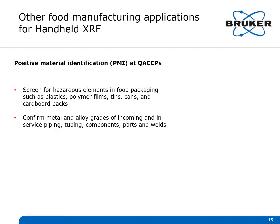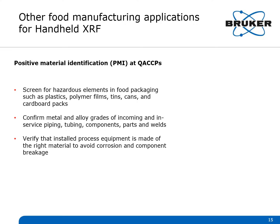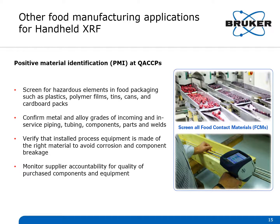You can confirm metal and alloy grades of incoming and in-service piping, tubing, components, parts, and welds. You can verify that installed process equipment is made of the right material to avoid corrosion and component breakage. You can monitor supplier accountability for quality of purchased components and equipment, and essentially screen all food contact materials.